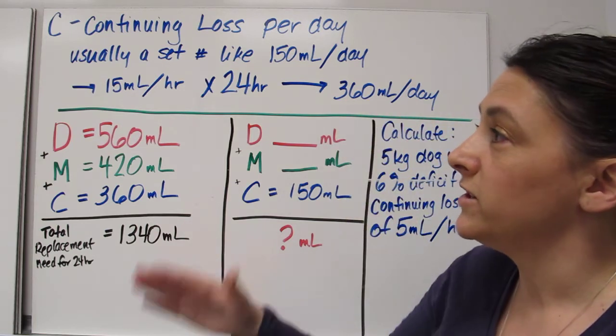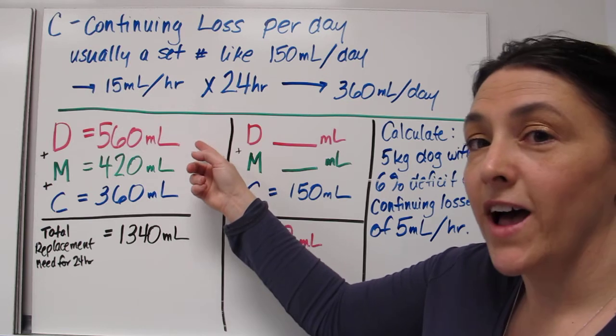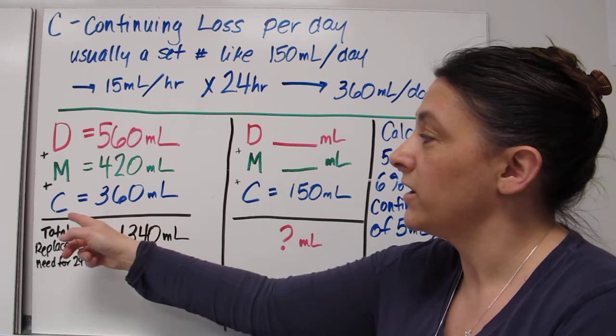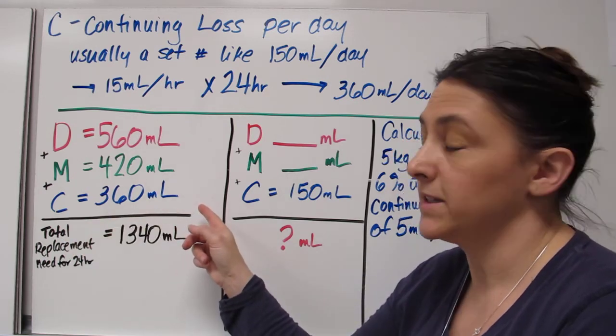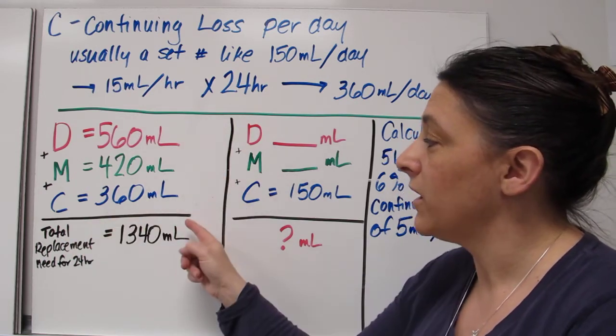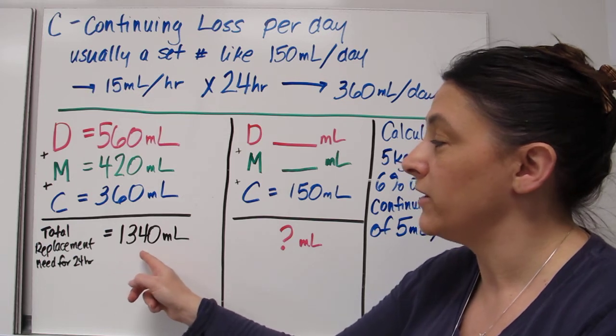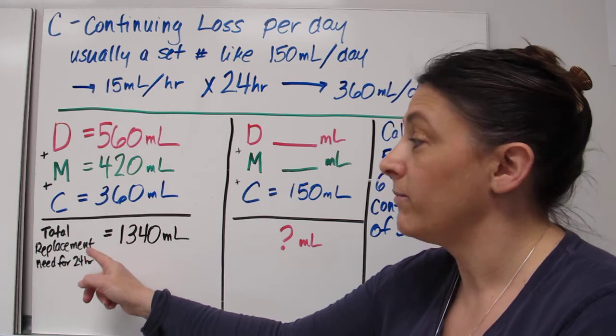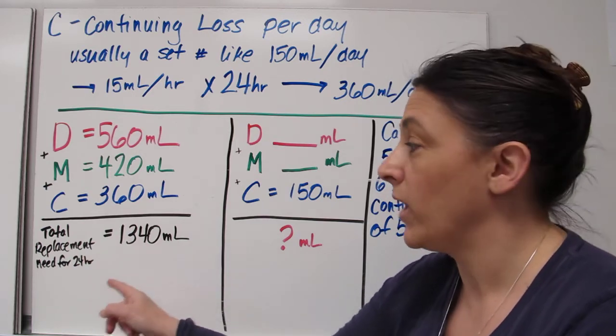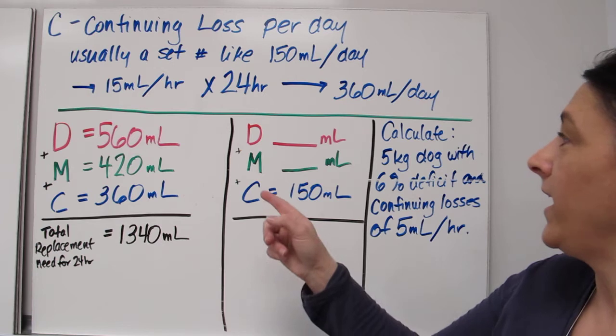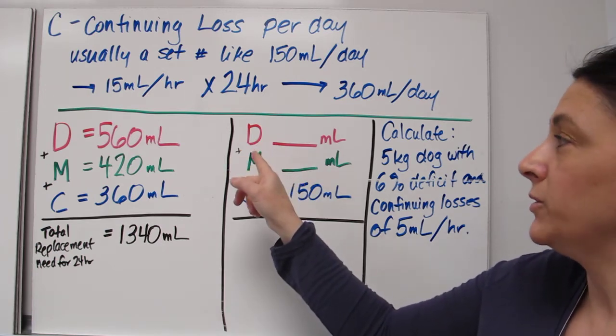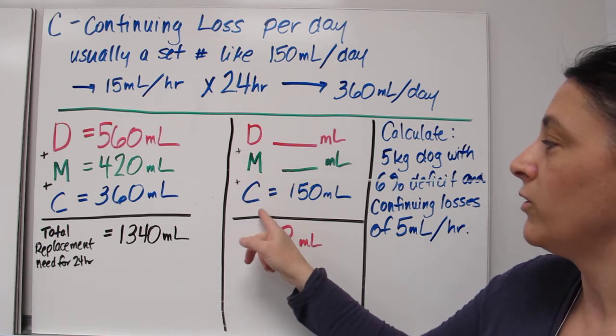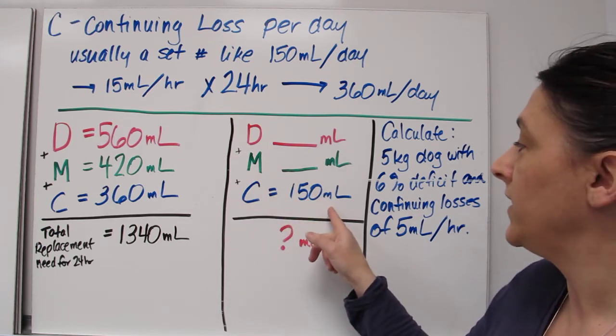So this equation that we've been going through, our deficit was 560 mL, our maintenance was 420 mL and our continuing losses is 360 mL. We're going to add those all together. We're going to come up with 1340 mL and this is our total replacement amount of fluids that is needed over 24 hours. So you go ahead and calculate out yours, which we've been doing, the deficit, the maintenance, and we're going to say that your patient has a continuing loss of 150 mL.